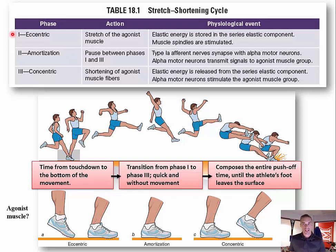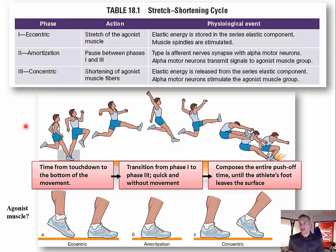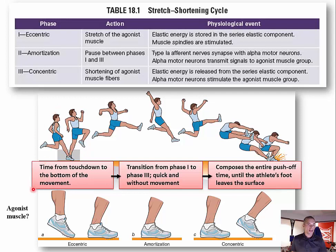As the muscle spindles are stretched, they send signals to the ventral root of the spinal cord via type 1a afferent nerve fibers. To visualize the eccentric phase, consider the long jump as an example. The time from touchdown of the foot to the bottom of the movement is the eccentric phase. In this case, the agonist muscles are primarily the calf muscles — the gastrocnemius and the soleus.